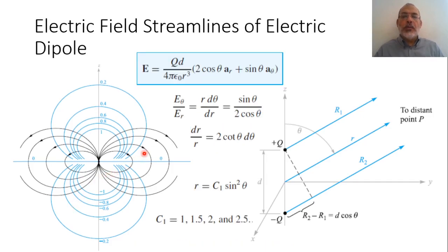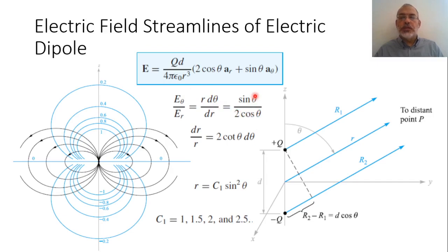For the electric field streamlines, we use the ratio of the theta component to the r component: Eθ/Er = r·dθ/dr. Since Eθ = sinθ and Er = 2·cosθ, we have r·dθ/dr = sinθ / (2·cosθ), which gives dr/r = 2·cosθ·dθ / sinθ. Integrating both sides yields r as a function of theta equal to a constant C times sin²θ.